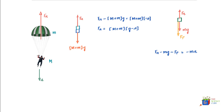Solving for F_P from this equation, we get F_P = F_A + m(A − G). We've already calculated F_A, so substituting it in gives the value of F_P — the force on the parachute due to the person.